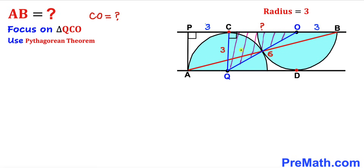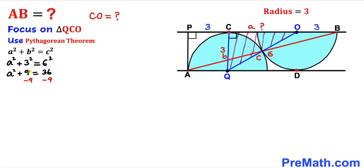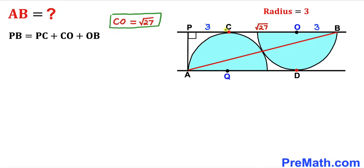Let's apply the Pythagorean theorem on right triangle QCO: A² + B² = C². The longest leg is C (which is QO = 6), one leg A is unknown, and side B is three. So: A² + 3² = 6², which gives A² + 9 = 36, so A² = 27. Taking the square root, A = √27. This length A equals CO, so CO = √27.